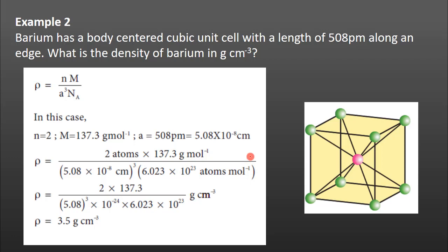Barium has a body-centered cubic unit cell with a length of 508 picometers along an edge. What is the density of barium in grams per centimeter cube?